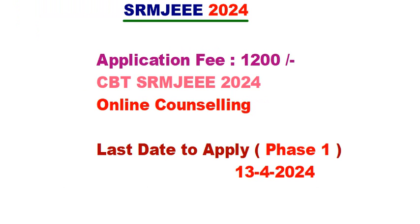SRM JEEE 2024 is a computer-based test conducted in two phases, to be written on your laptop. SRM counseling works differently — the best ranks get first admission in phase one, and the second phase fills remaining seats. For a private university counseling, you need to understand the process clearly.